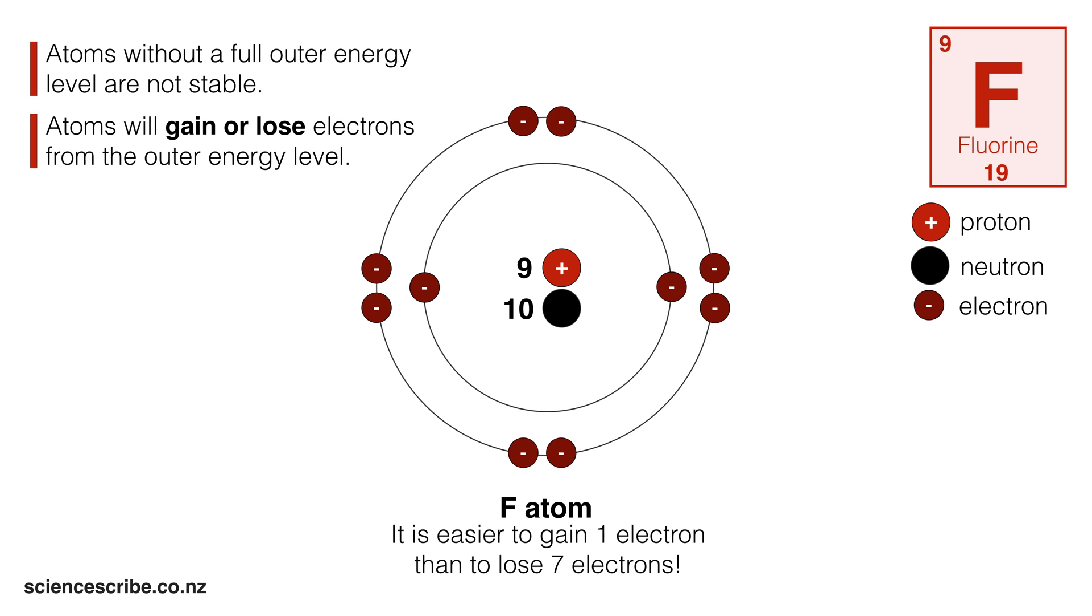You can probably tell just by looking at that animation that it's a lot easier to gain 1 electron than it is to lose 7, and that's exactly what happens. The result of gaining or losing electrons is called an ion, so instead of calling this an F atom, I now call it the fluoride ion.